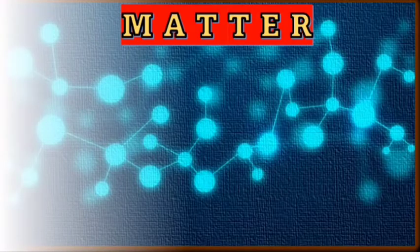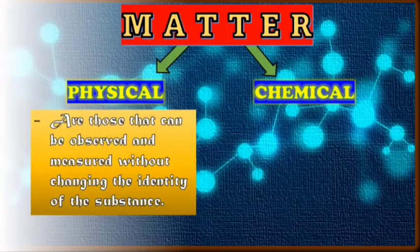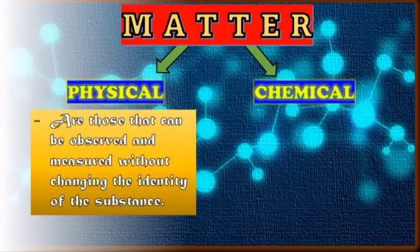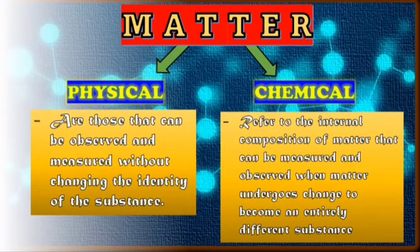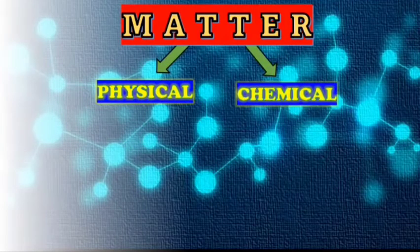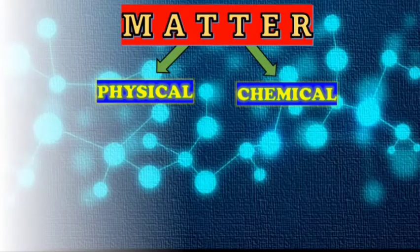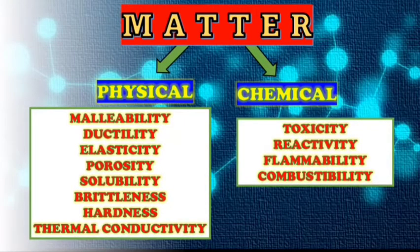Matter has two properties. These are the physical property and chemical property. Physical properties are those that can be observed and measured without changing the identity of the substance. While chemical properties refer to the internal composition of matter that can be measured and observed when matter undergoes change to become an entirely different substance. Examples of physical properties include malleability, ductility, elasticity, porosity, solubility, brittleness, hardness, and thermal conductivity. Chemical properties, on the other hand, include four processes: toxicity, reactivity, flammability, and combustibility.